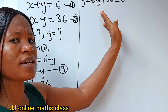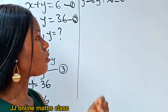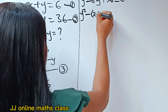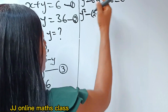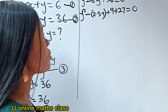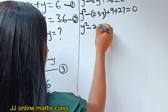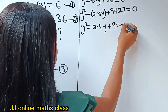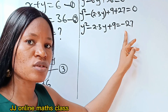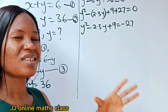Now we are going to manipulate this equation. We have y squared — noting that 6 is the same as 2 times 3 — so minus 2 times 3 times y. Then 36 is the same as 9 plus 27, so plus 9 plus 27 equals 0. Rearranging: y squared minus 2·3·y plus 9 equals minus 27.